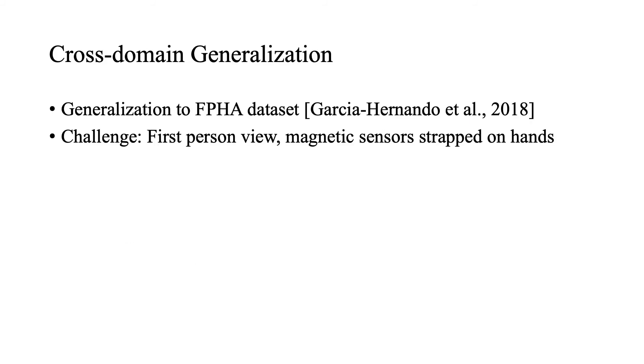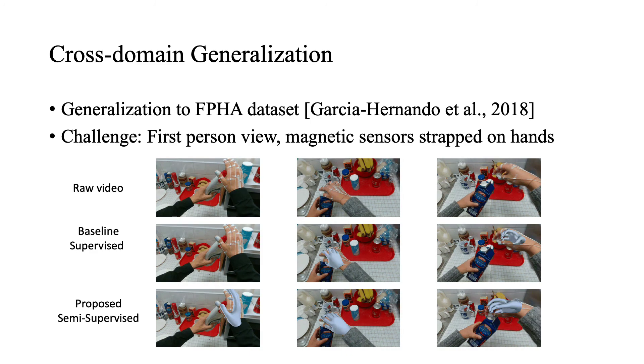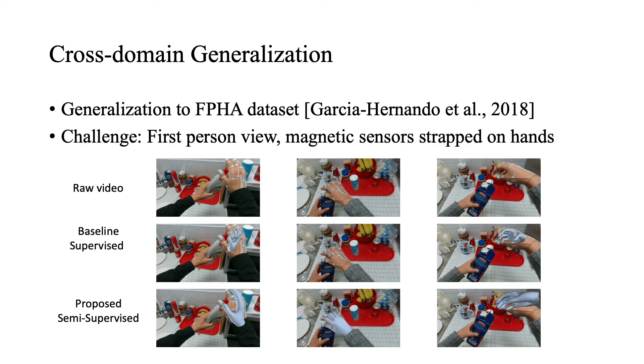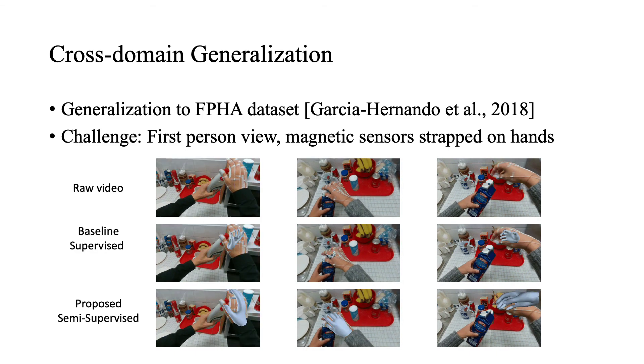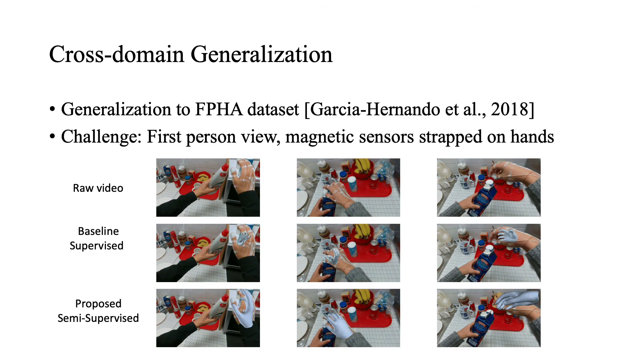We evaluate the generalization performance of our model on the FPHA dataset before and after semi-supervised learning. The first-person viewpoint and sensors strapped on the hand introduce great challenges for the model's generalization. As can be seen, the proposed method with semi-supervised learning has much better generalization performance than the baseline method.